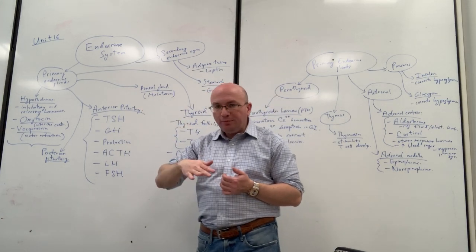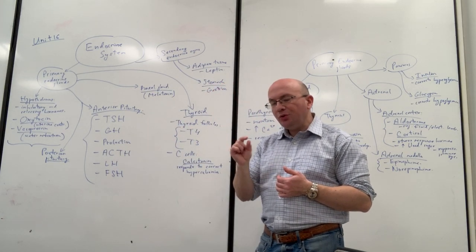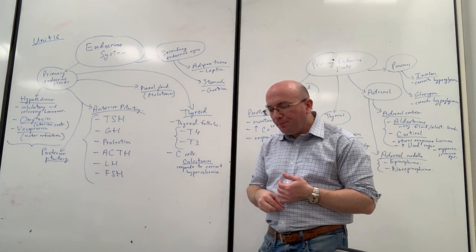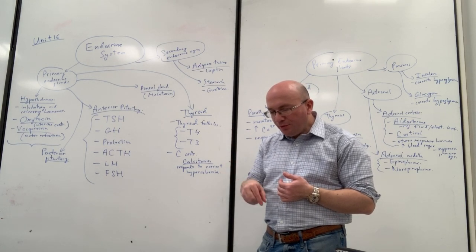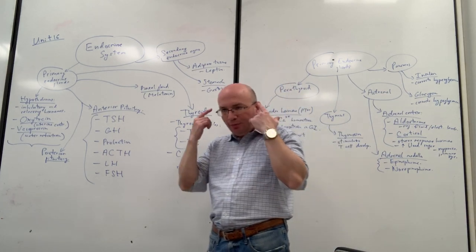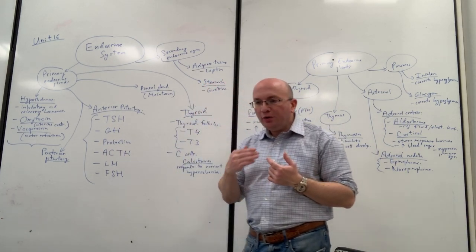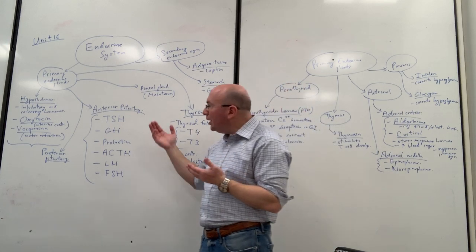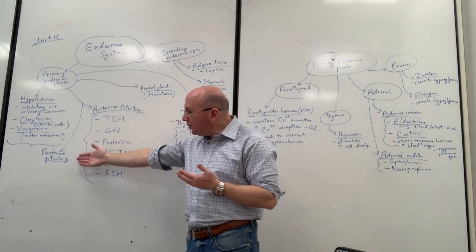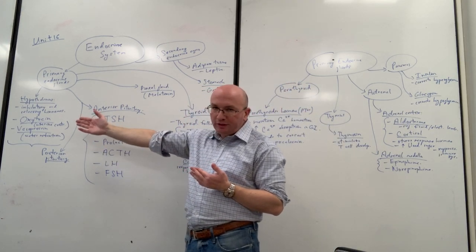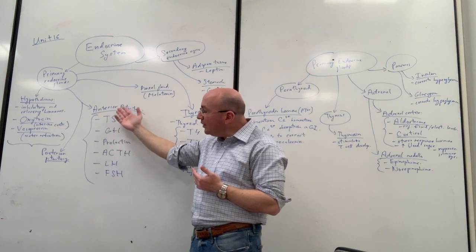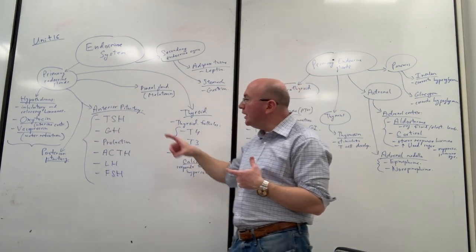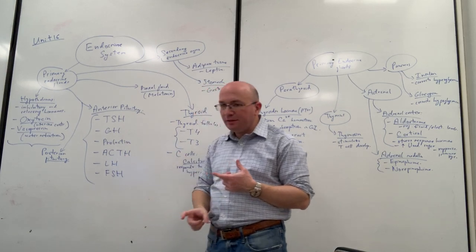The next structure right below the hypothalamus is the pituitary — a very small structure hanging off a stalk from the brain, protected by the sphenoid bone in the skull. There are two parts of the pituitary: the anterior and the posterior pituitary. We just talked about the posterior pituitary, which releases those two previous hormones. The anterior pituitary is much more important — it releases at least six different hormones.